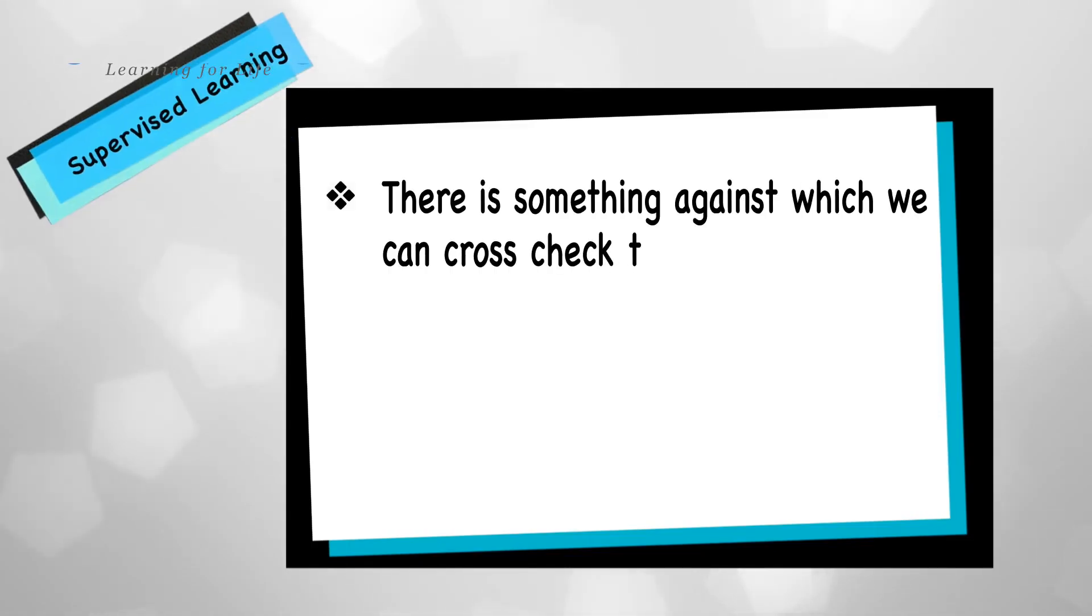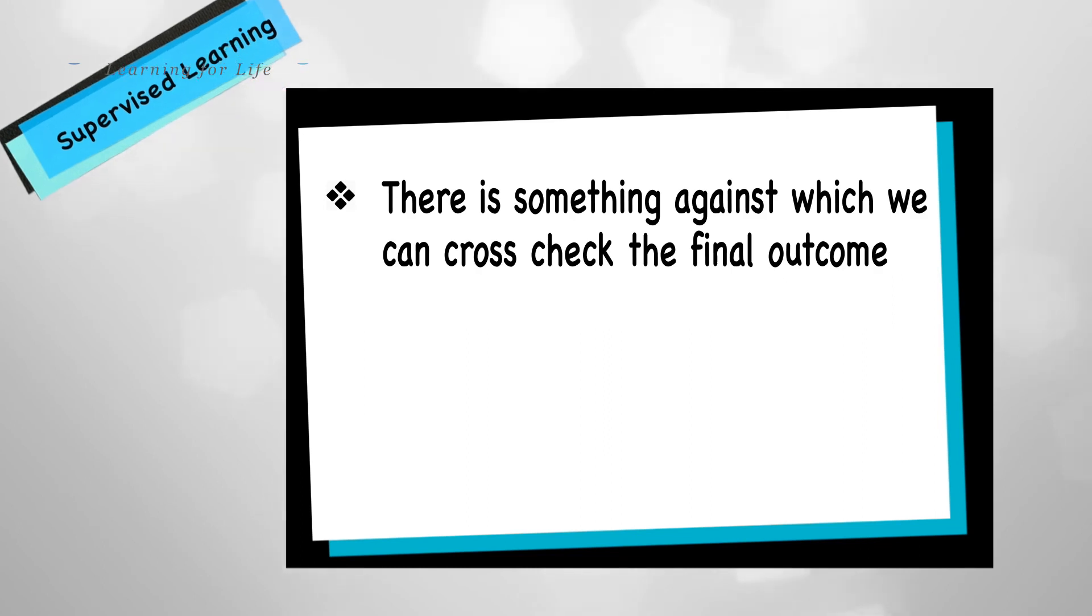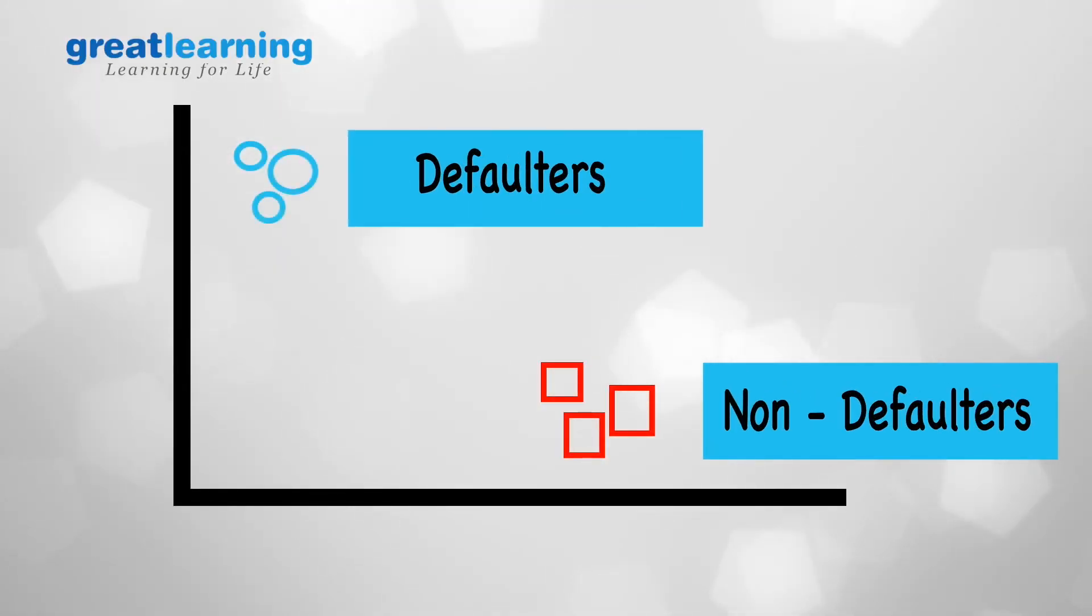Supervised learning, on the other hand, is where there is something against which you can cross-check. For example, if I'm trying to develop a model which predicts the defaulters from the good borrowers, once I have classified the data into defaulters and non-defaulters, I can actually cross-check with the observations whether they actually defaulted or not. To make it very simple, in unsupervised learning there is nothing to cross-check, but still we do a lot to get better. In fact, a lot of artificial intelligence is based on unsupervised learning. Whereas in supervised learning, we are much more focused—we can cross-check and say what we have predicted, how close it is to the actual.